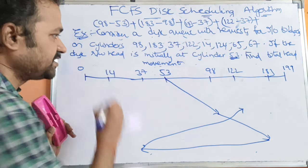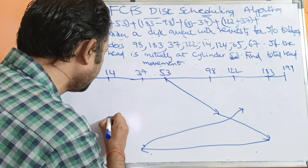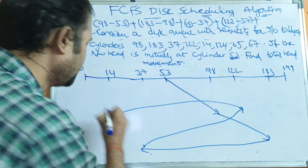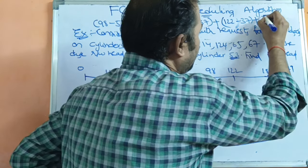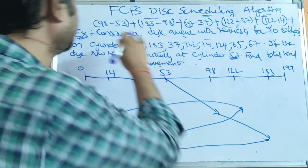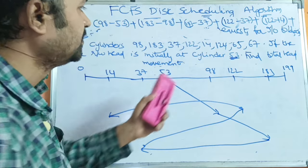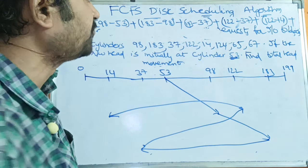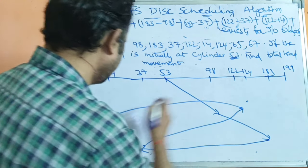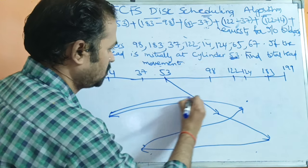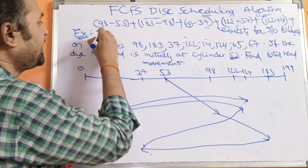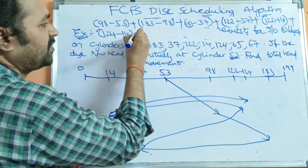After 122, we have to access cylinder 14. From 122 to 14, we subtract 14 from 122: that is 122 minus 14. Next, from 14 we move to cylinder 124. We subtract 14 from 124: that is 124 minus 14.